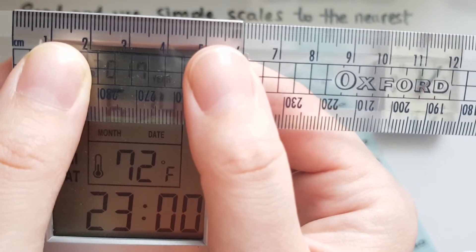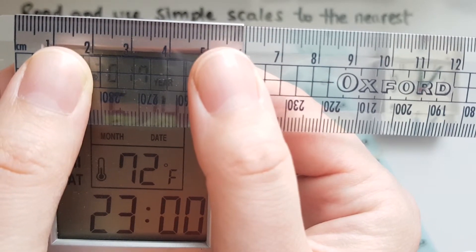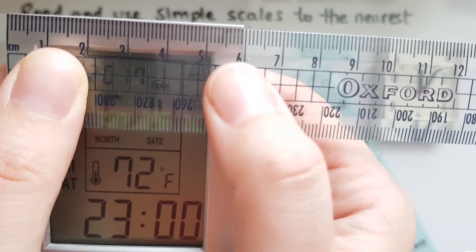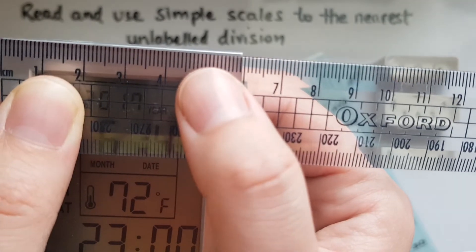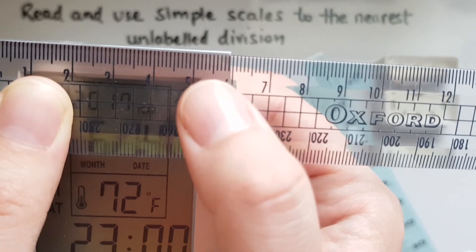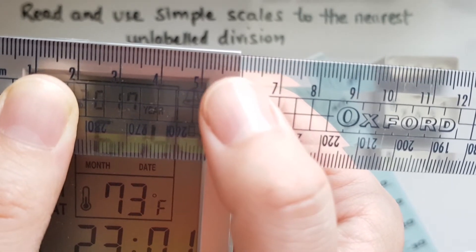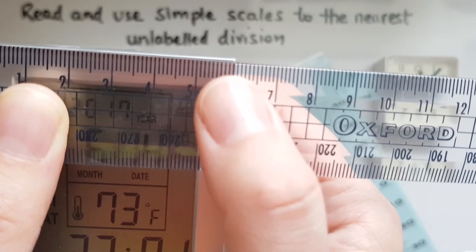So this is closer to the 0.9. So this must be 5.9 because we've got 5.1, 2, 3, 4, 5, 6, 7, 8. And this is closer to 5.9.